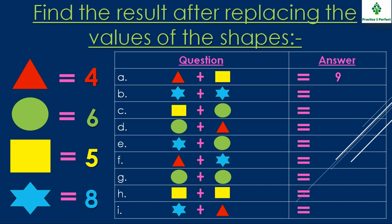In this given question see the shape, write its value and then do the addition. I will explain with an example. The first example is triangle plus square. Triangle has the value 4 and square has the value 5. So here it will be 4 plus 5 which is equal to 9.